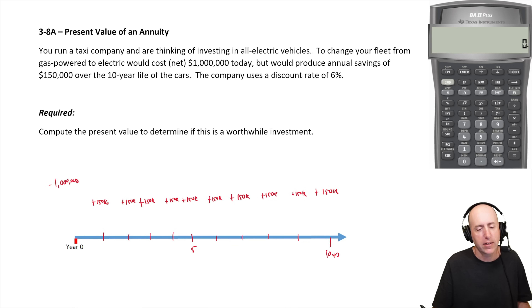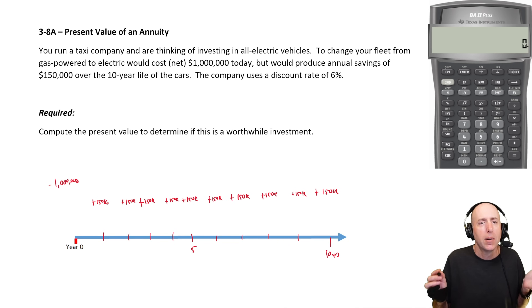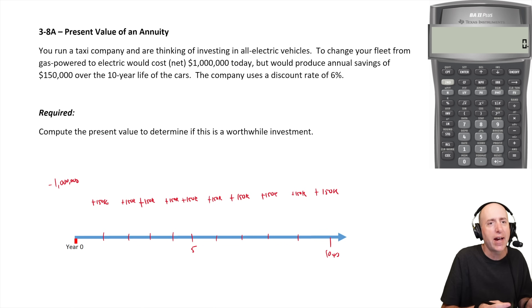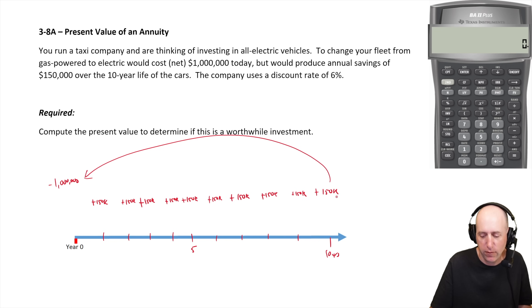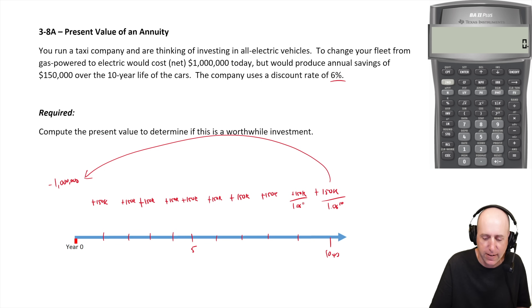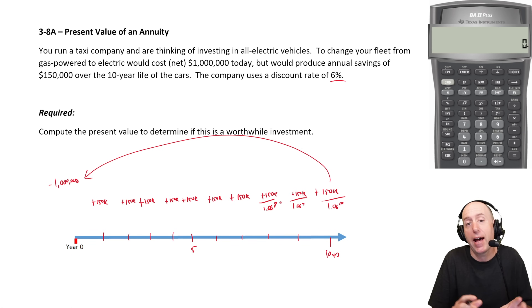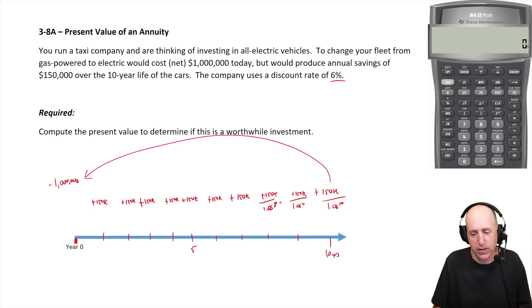The question is: what's the value of saving $150,000 a year over the next 10 years? The answer is not $1.5 million — 150 times 10 is $1.5 million, but of course those are future dollars and they need to be discounted to today. We could discount each one individually — dividing by 1.06 to the 10th, 1.06 to the 9th, and so on — and add those all up. But that's a pain in the neck.